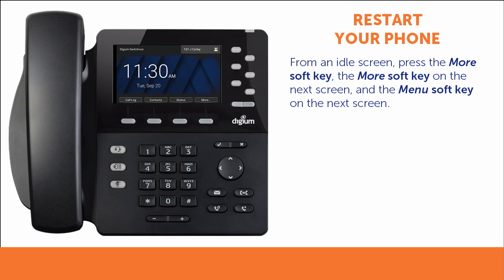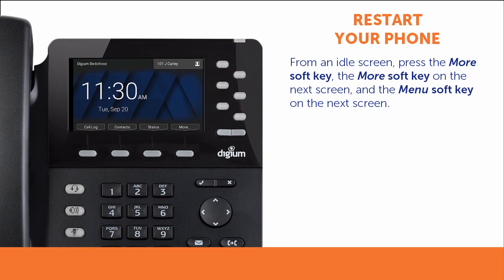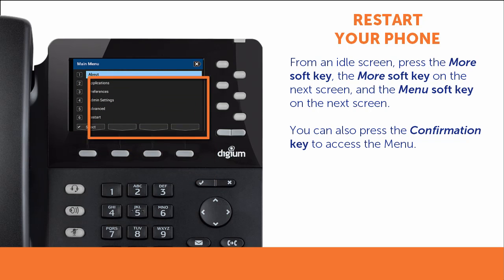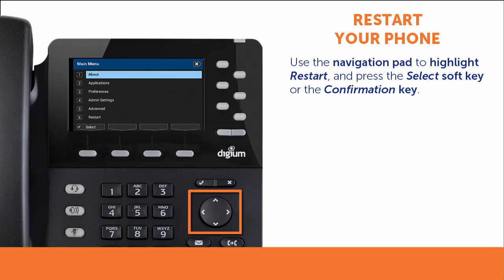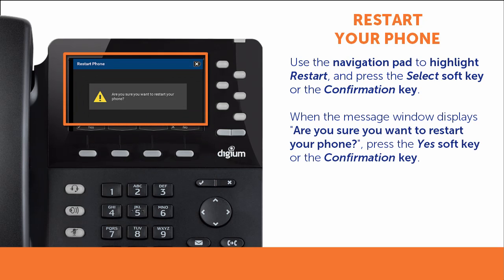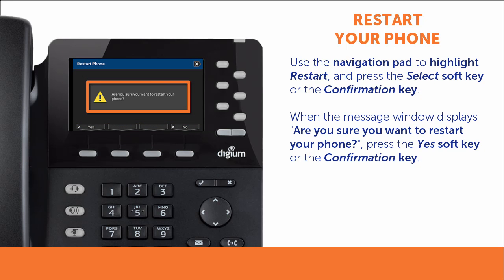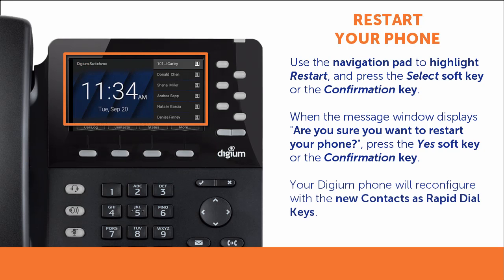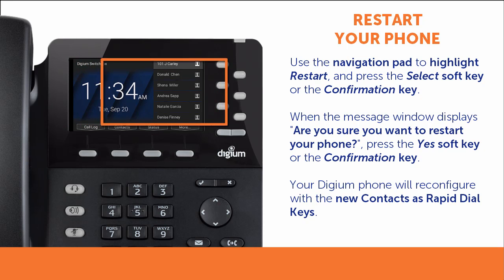Restart your phone from the main menu. From an idle screen, select the More soft key, then the More soft key on the next screen, and finally the Menu soft key. You can also press the Confirmation key once to get to the menu. Use the navigation pad to highlight Restart and choose the Select soft key or press the Confirmation key on the phone. A message window appears asking, are you sure you want to restart your phone? Choose the Yes soft key or press the Confirmation key on the phone. Your Digium phone will reconfigure with the new contacts as Rapid Dial keys.